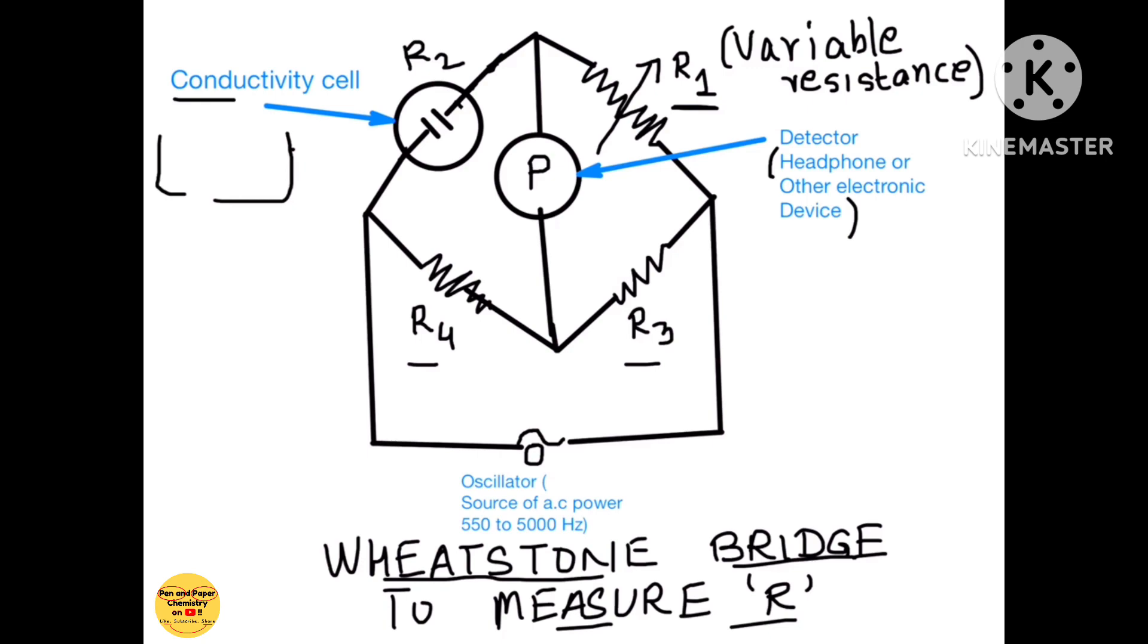Then we replace the known electrolyte by an unknown electrolyte. The electrolyte whose conductivity is to be measured and again we will measure at what point does this detector go silent and that will help us to determine the resistance of the electrolyte in the conductivity cell.